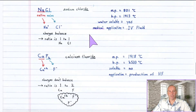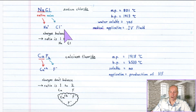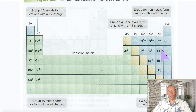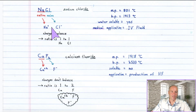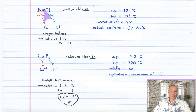Our first example is NaCl. We've all seen this one before — this is sodium chloride. Sodium is a plus one ion and chloride is a minus one ion. Sodium is in the plus one column and chlorine is in the minus one column. The charges balance, so you don't need two chlorides to balance the positive sodium. The ratio is simply one to one — for every one sodium, you need one chlorine.